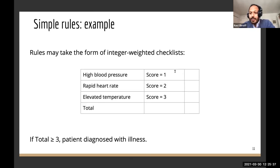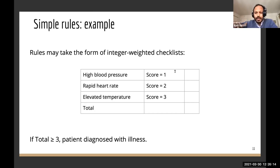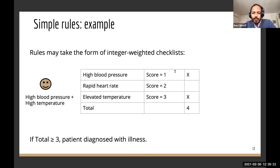For example, suppose I'm a doctor trying to diagnose whether a patient has a particular illness. A checklist might have three factors: whether the patient has high blood pressure, a rapid heart rate, or an elevated temperature. A patient gets a score depending on which factors they have — for example, high blood pressure scores one, elevated temperature scores three. You add up the total and make a decision based on whether that total is above some threshold. A patient with high blood pressure and elevated temperature scores four, and if the threshold is three, you'd flag this patient.